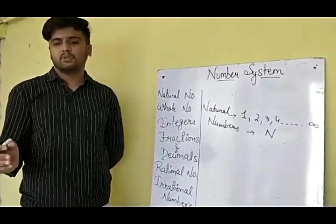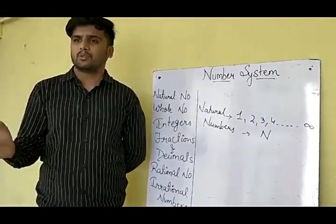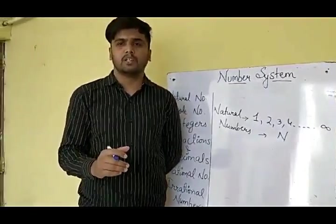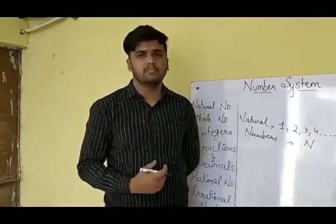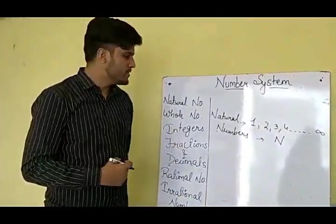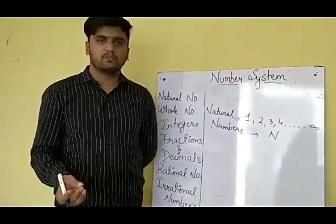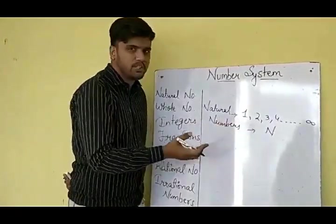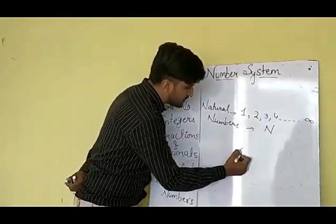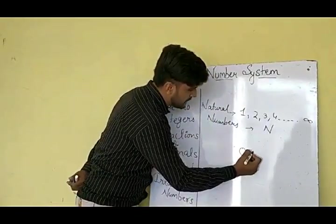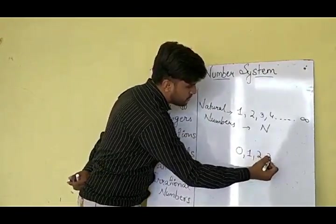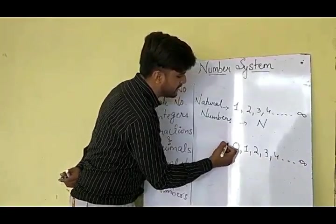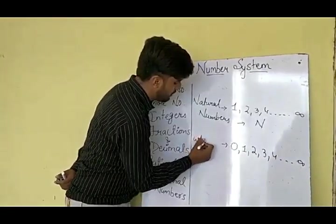Take an example: if I ask everybody to move out of the class, how many students are left in the class? Yes, the number is 0. So there was a need of 0 also, but since we start our counting from 1, there was no 0. Now, when we include 0 in these numbers — that is 0, 1, 2, 3, 4 and so on up to infinity — these numbers are called Whole Numbers.